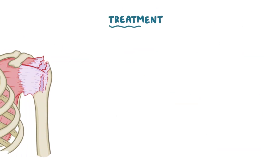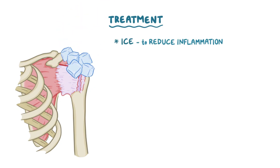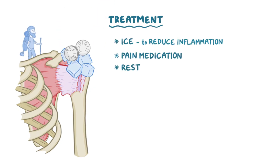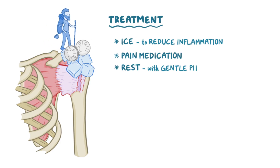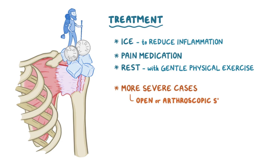The treatment of a rotator cuff tear begins with ice to reduce inflammation, pain medication, and rest, with gentle physical exercise to prevent stiffening. In more severe cases, open or arthroscopic surgery may be needed to repair the torn tendon.